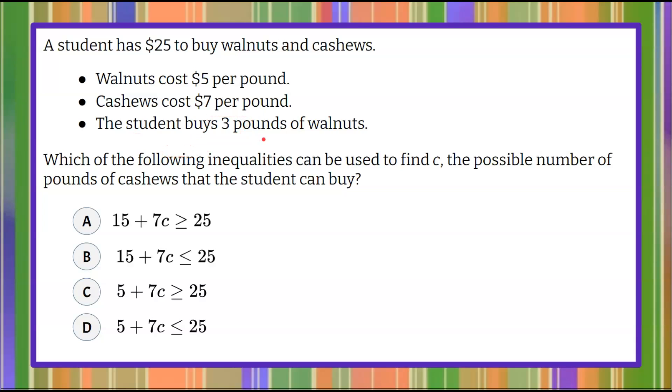The student will buy 3 pounds of walnuts. And then we are asked which of the following inequalities can be used to find C, the possible number of pounds of cashews that the student can buy. And you've given 4 inequalities to pick from.